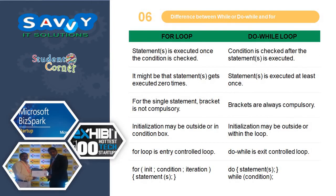Difference between for loop and do-while loop: in for, statements are executed once the condition is checked. In do-while, the condition is checked after the statement is executed, so the statement is executed at least once. For a single statement in for, brackets are not compulsory; in do-while, brackets are compulsory. Initialization in for may be outside or in the condition block; in do-while, initialization may be outside or within the loop. For loop is entry-controlled; do-while is exit-controlled.